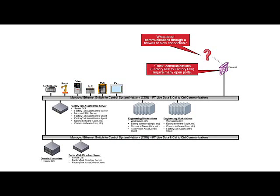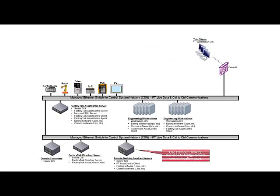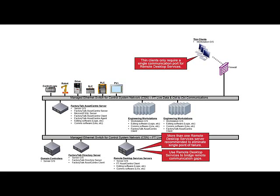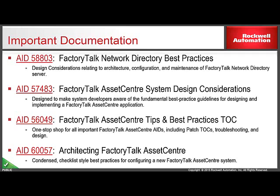Finally, some architectures require remote connections, either through a firewall or over a network connection that is unreliable or slow. For these architectures, a direct connection from the FactoryTalk Asset Center client to its server is rarely desirable. Instead, use Microsoft Remote Desktop Services to bridge this communications gap. Remote Desktop Services allows remote users to log into a server and create a new instance of a client, all without having the software installed on the client itself. When using Remote Desktop Services, it is recommended to use at least two server hosts for the purposes of high availability. For more information on designing FactoryTalk Asset Center systems, please refer to the resources located on the Rockwell Automation Knowledge Base.